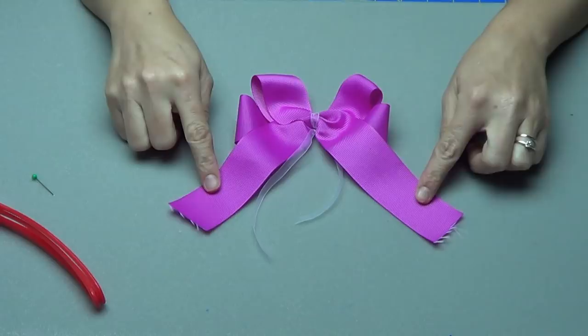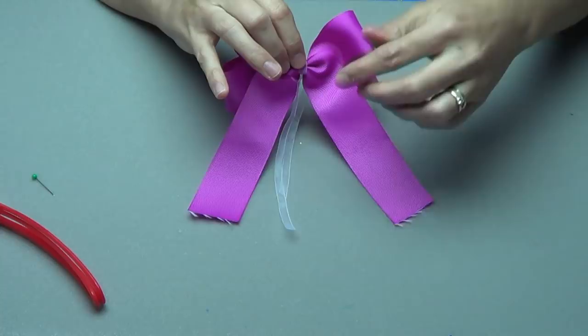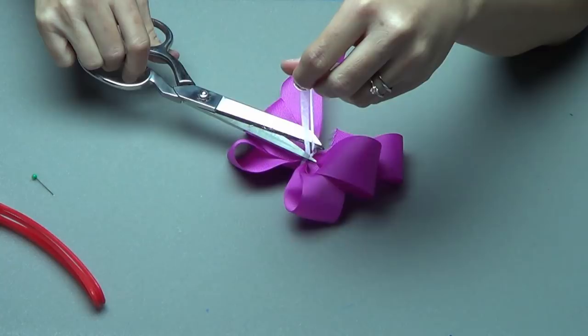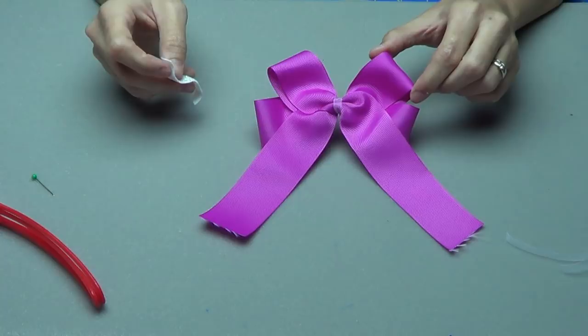Now that we have the bow done, you have your four loops and your two tails going down. You're going to trim the back of the bow tying ribbon off. You don't need that anymore.